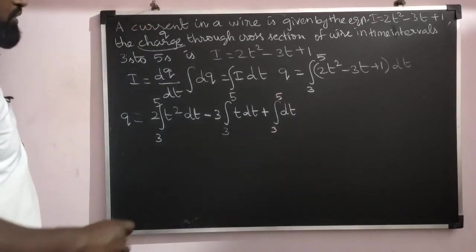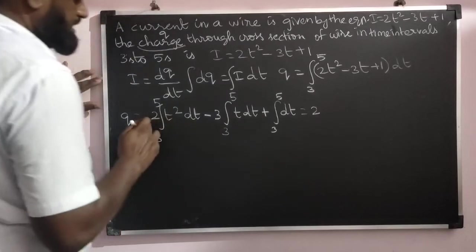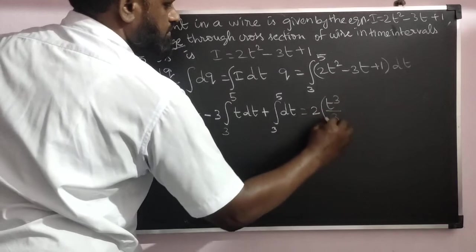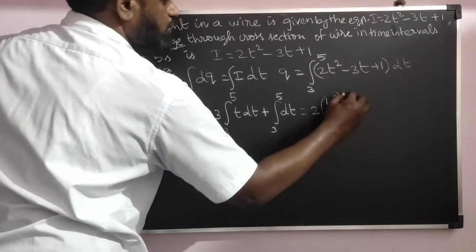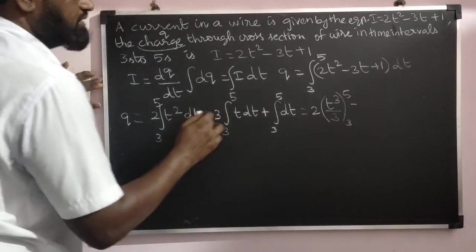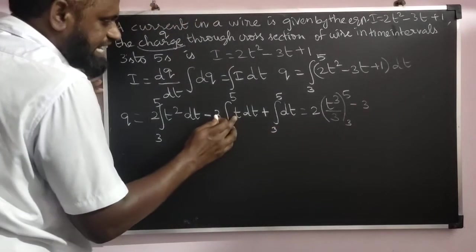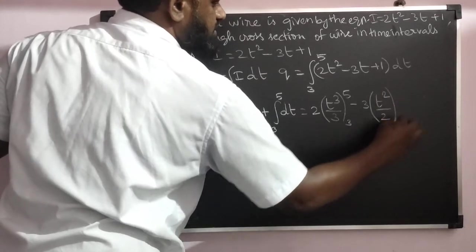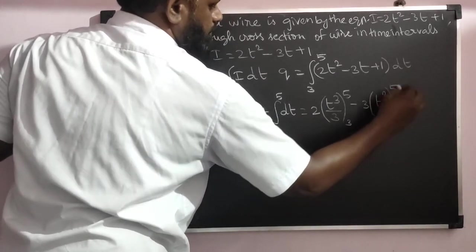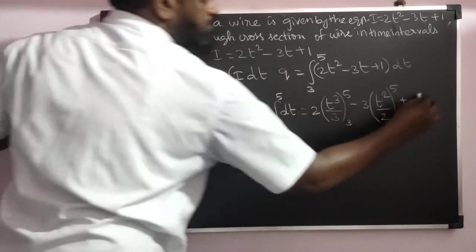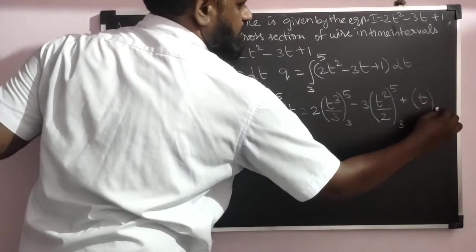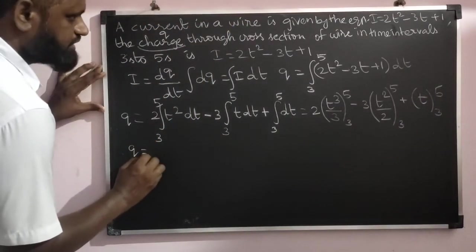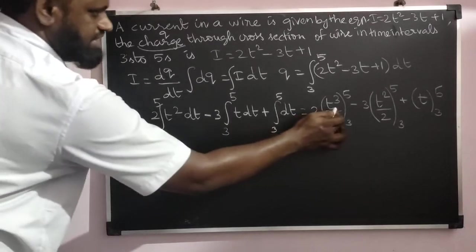What we get here: integration of t² is t³/3, limit 3 to 5. Same way here, integration of t is t²/2, limit 3 to 5, plus dt becomes t, limit 3 to 5. Now apply the limit: q = 2/3